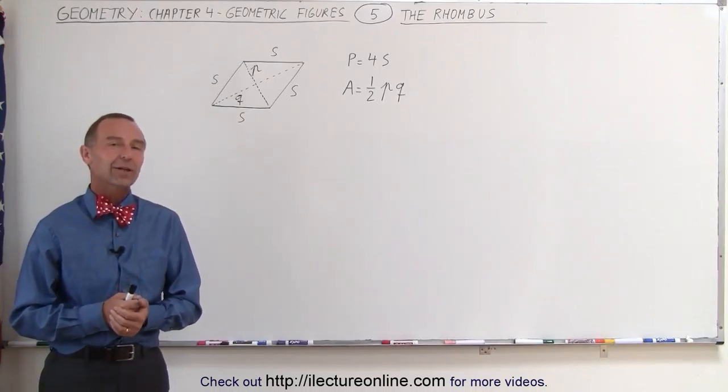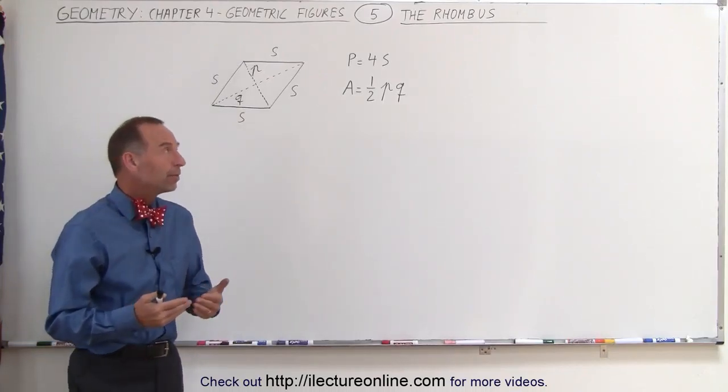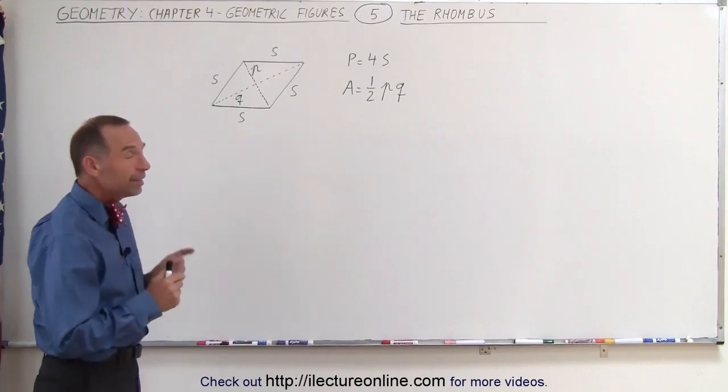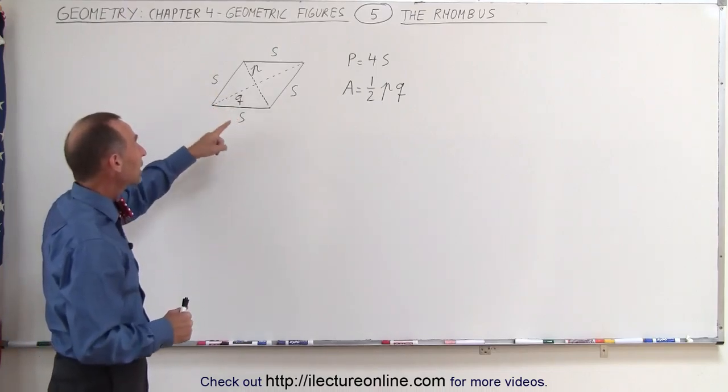Welcome to ElectronLine. Now let's take a look at the rhombus. The rhombus is like a parallelogram, but in this case the length of all sides are equal to one another.